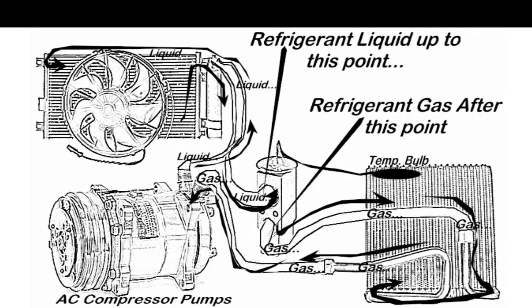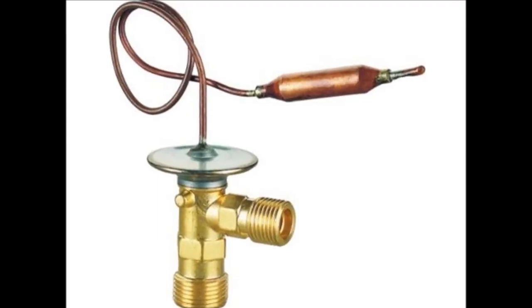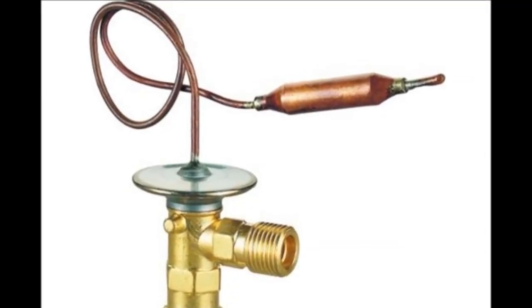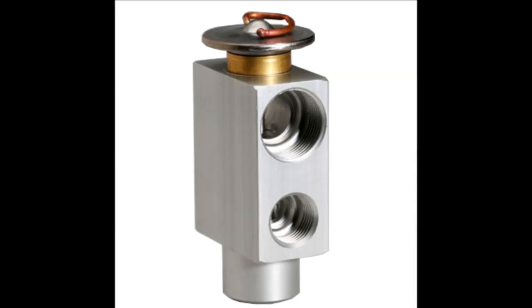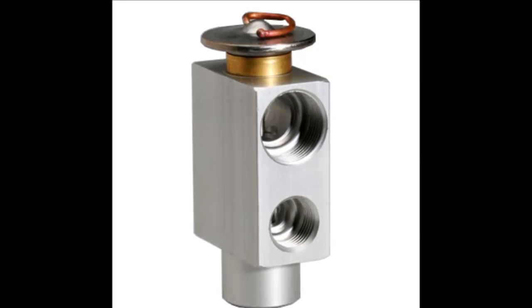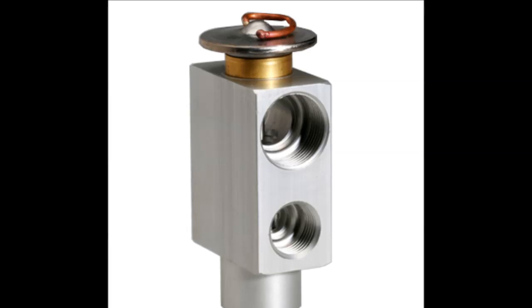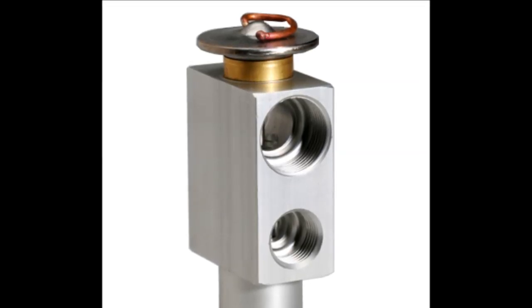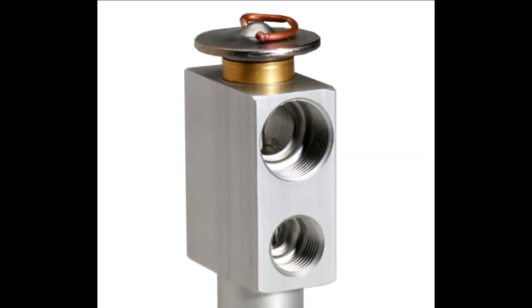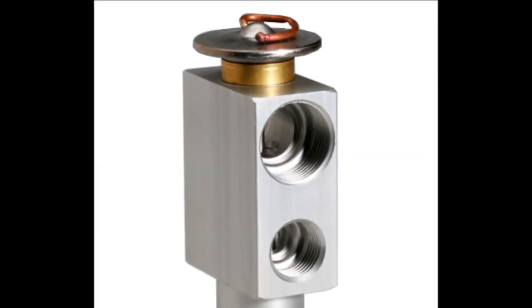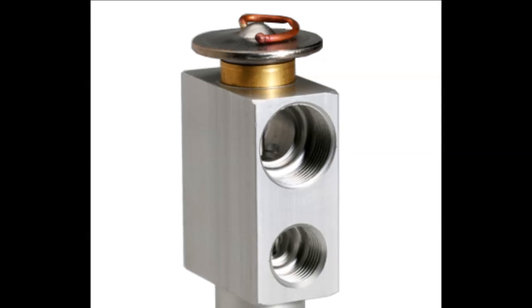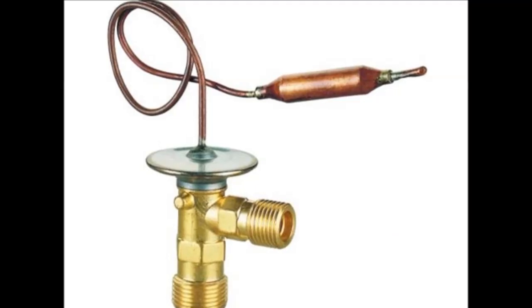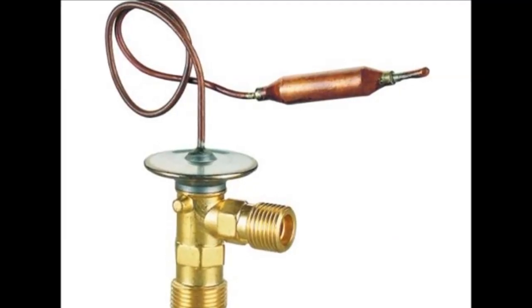Now this is what the expansion valve looks like. There are two main expansion valves. One is made out of brass, and then there's the other one which is found on most imports, especially European ones, which is the rectangular block, commonly referred to as the block. They both do the same thing, which is turn the liquid refrigerant into a gas.